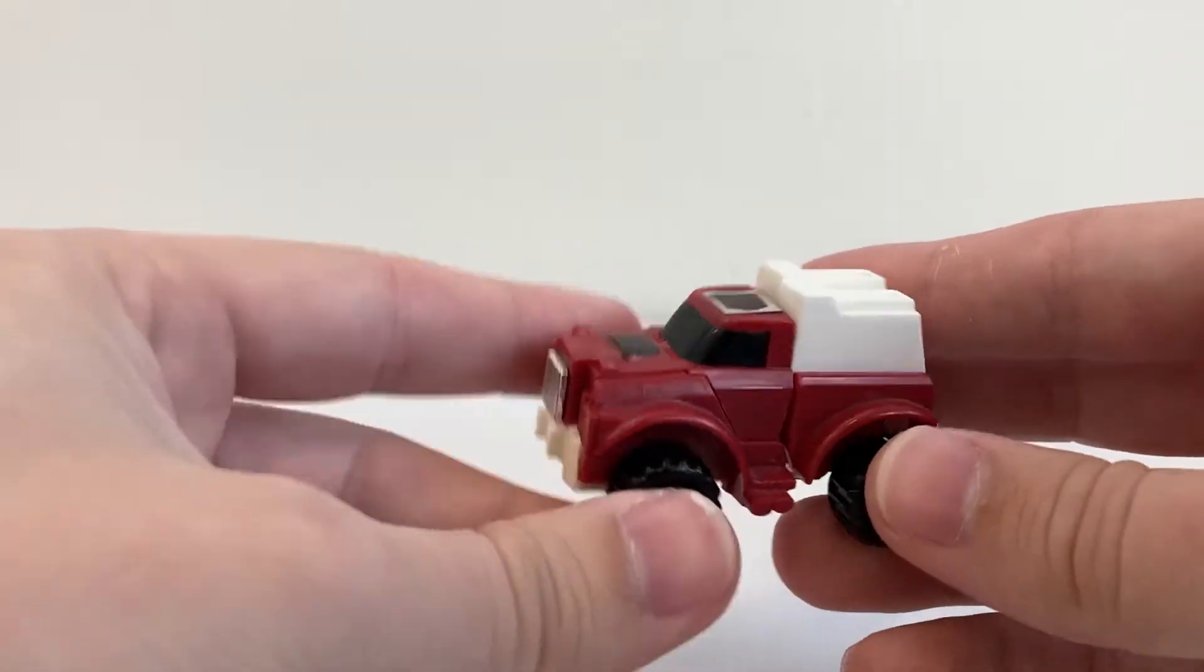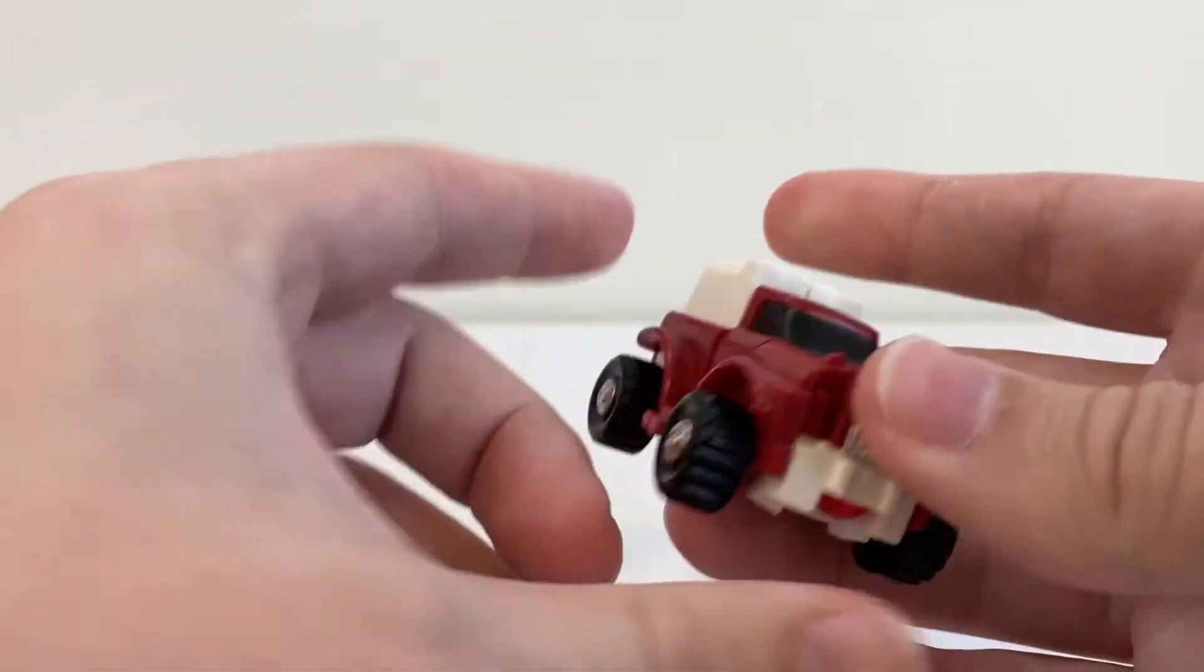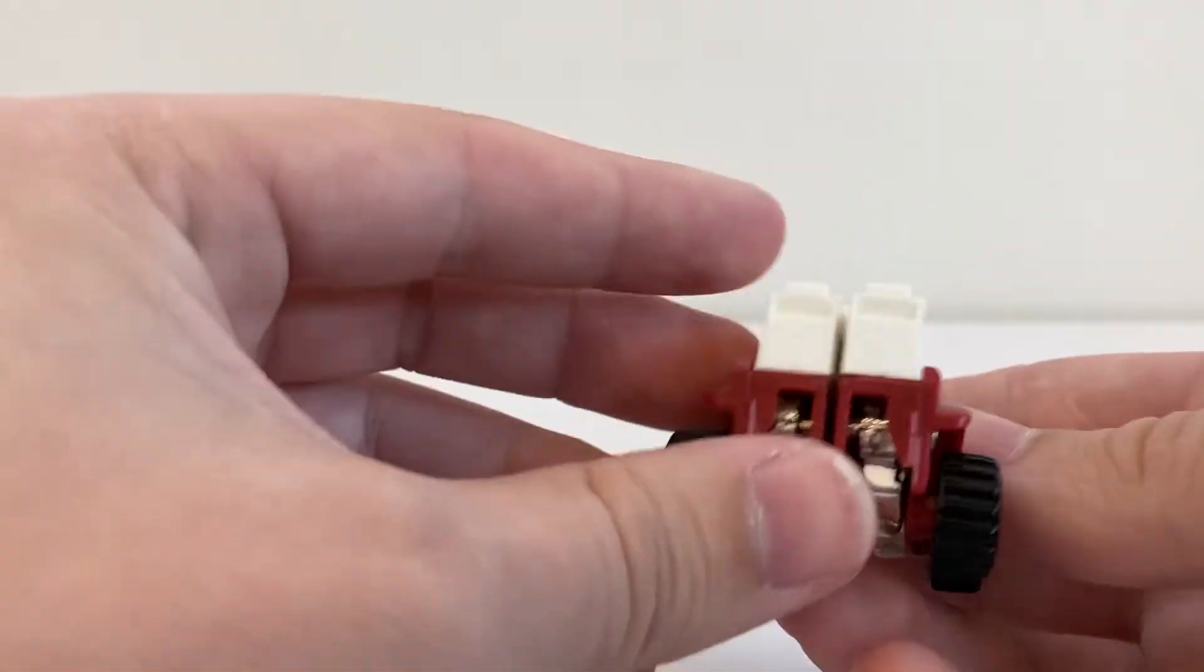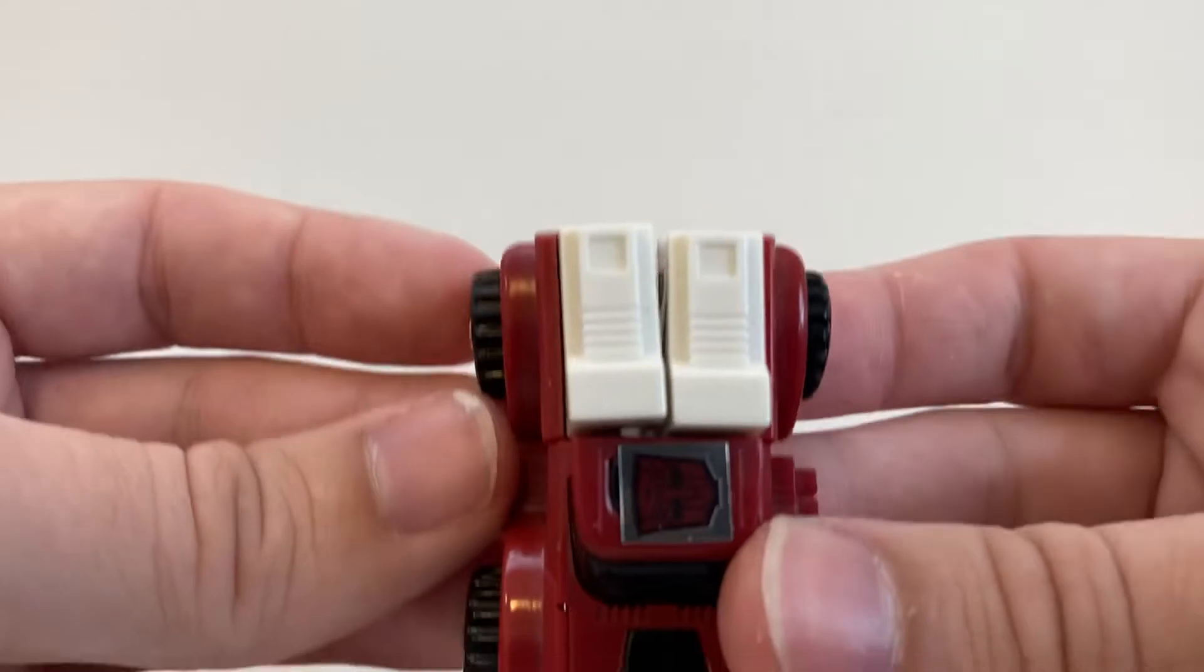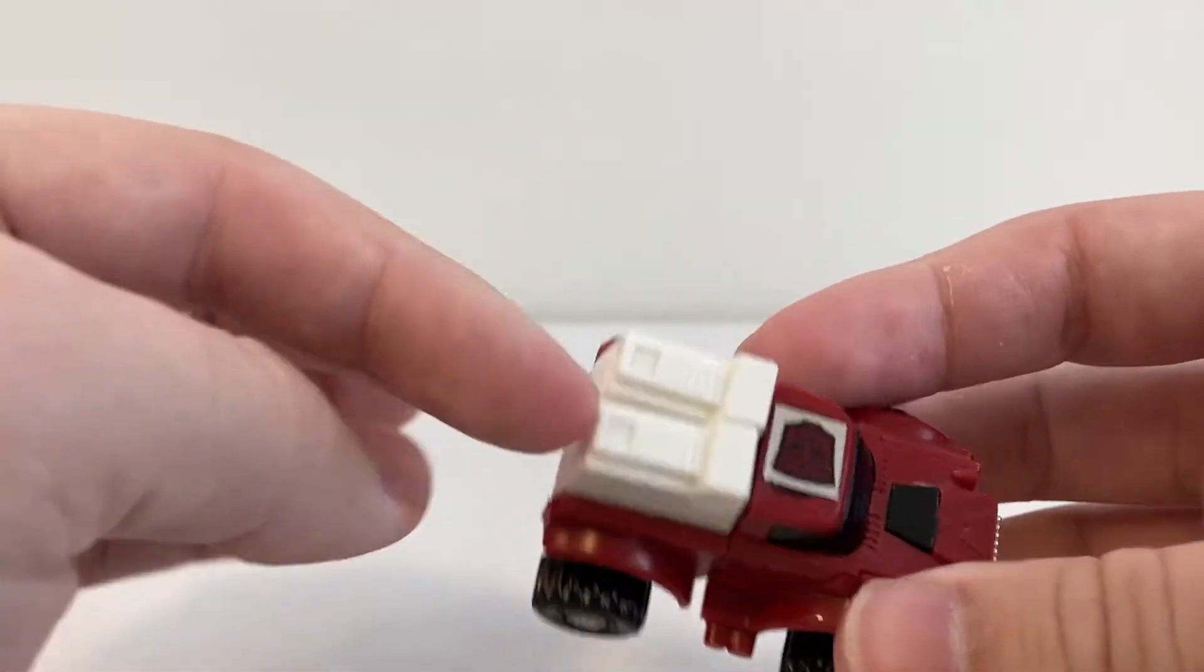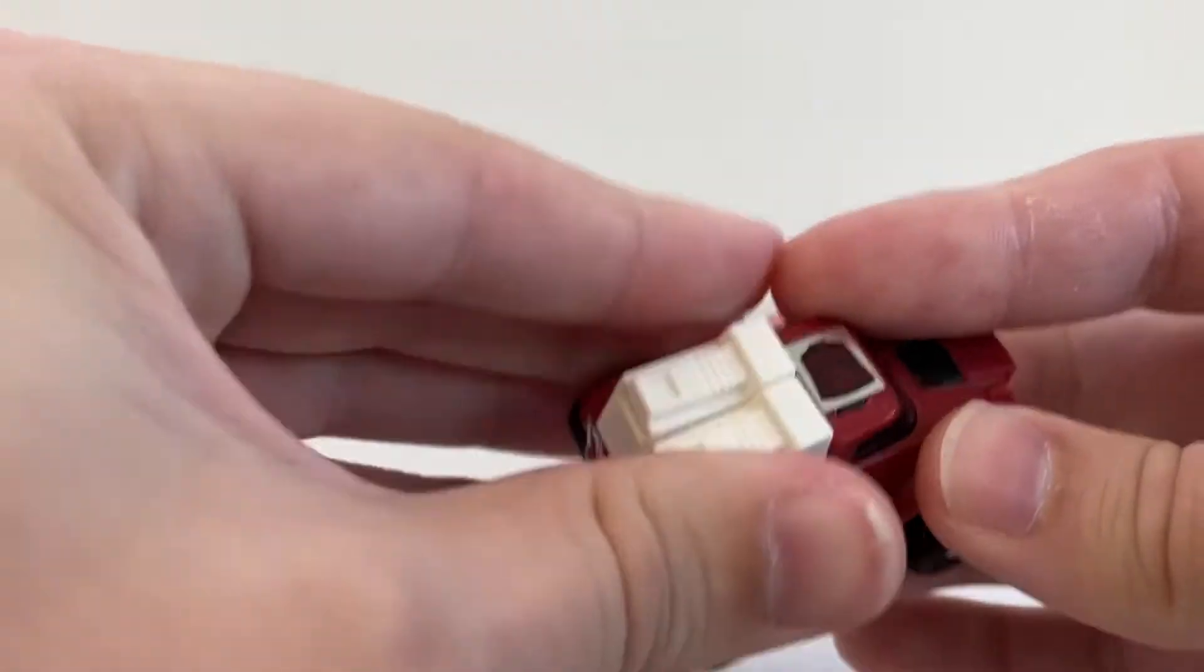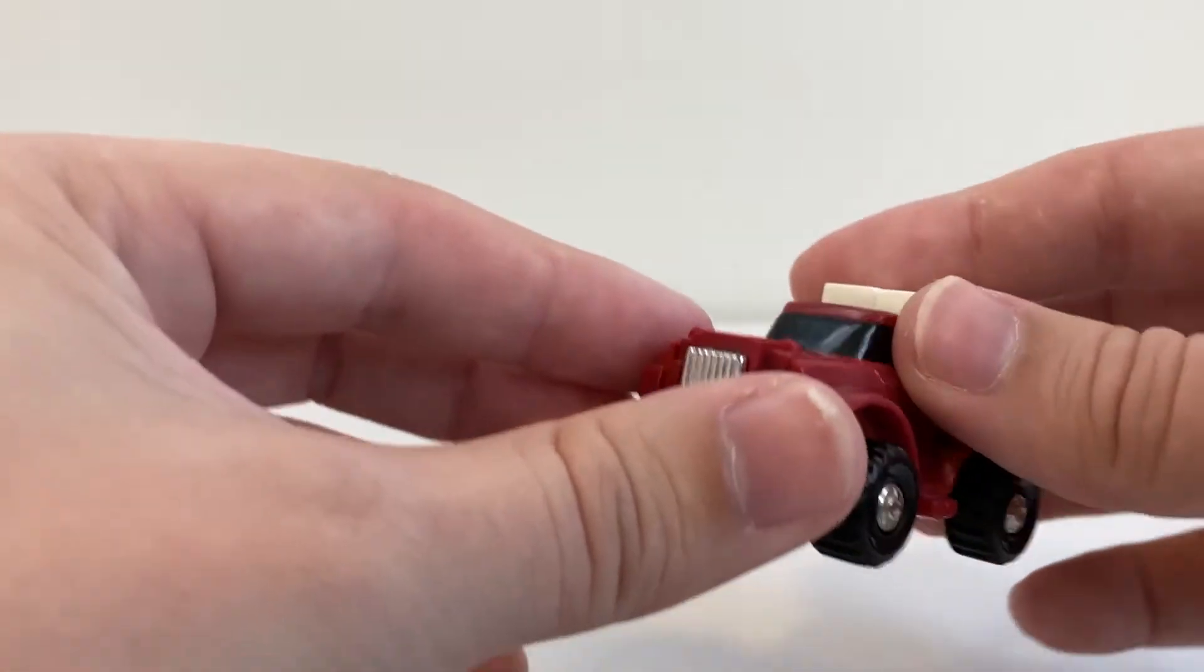This is an original G1 Swerve—actually, this is one of the Walmart reissues that came out last year. I'm not sure if this is particular to mine or how the mold usually is, but I can't quite get both legs to sit parallel in place here, which is kind of annoying. But it's a G1 figure, so it's not that big a deal.